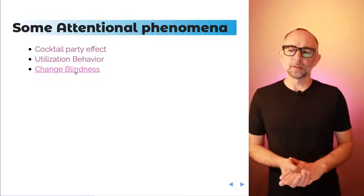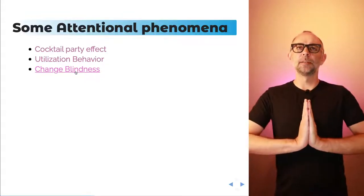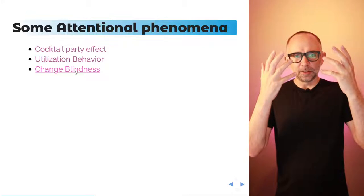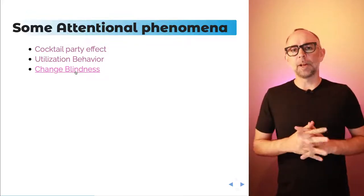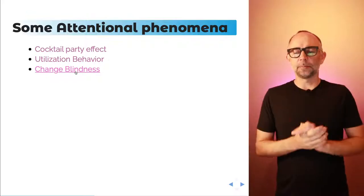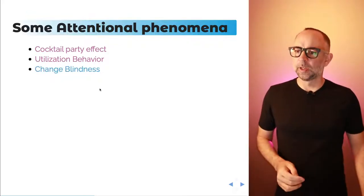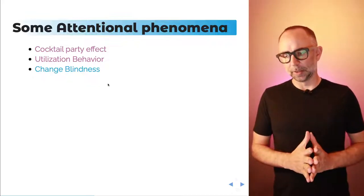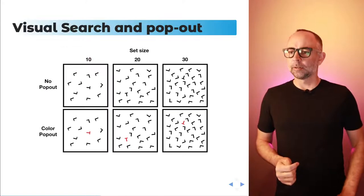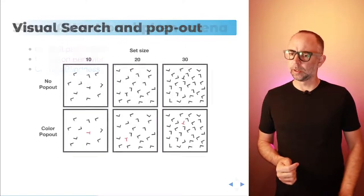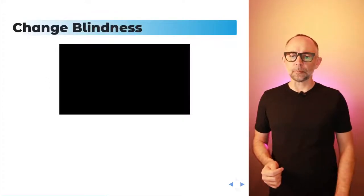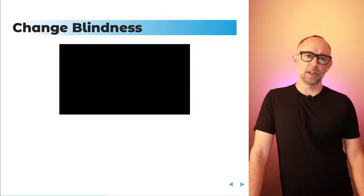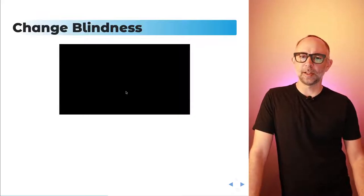Another one is change blindness. There's limitations here, and attention, in some sense, appears to be allowing us to perceive some kinds of information, and sort of blocking out other kinds of information. And this can be demonstrated nicely with change blindness examples. I'm going to show you an example.